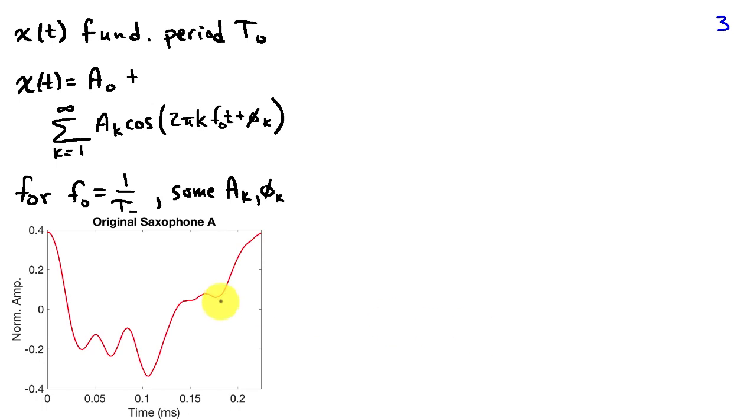This is a saxophone playing a note A, and this is one period. We're looking at 0.2 milliseconds. This repeats 440 times a second. So I'm showing you a fundamental period of the note A being played by a saxophone.